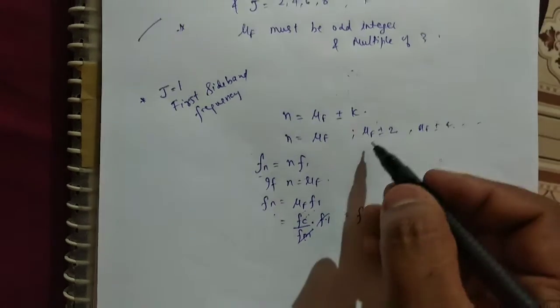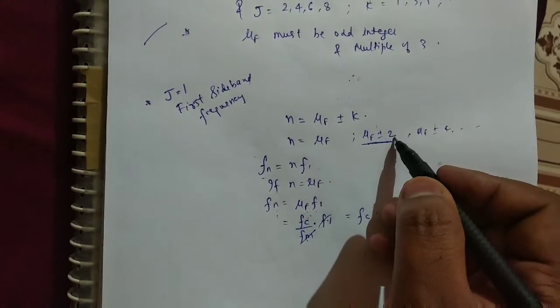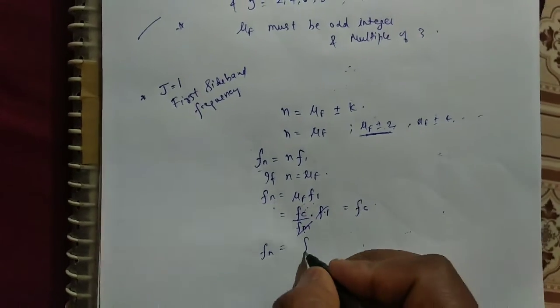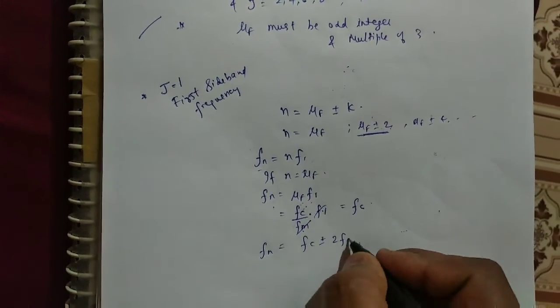And μ_F is F_C by F_M, so F1, and F_M is equal to F1, so it is cancelled. So F_n is F_C. In similar way, μ_F plus minus 2 will be F_C plus minus 2F1.